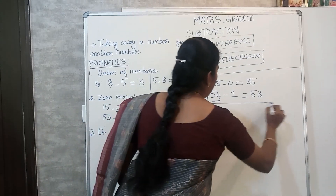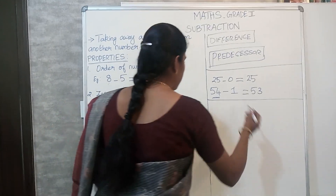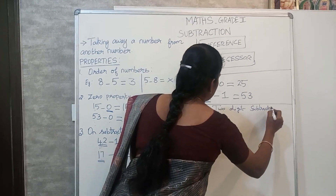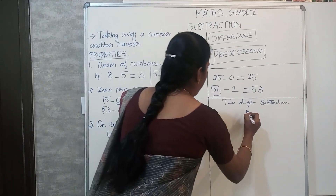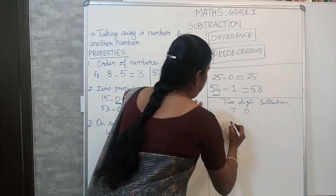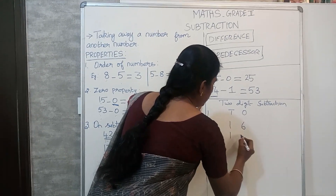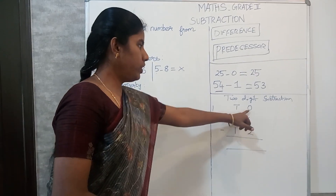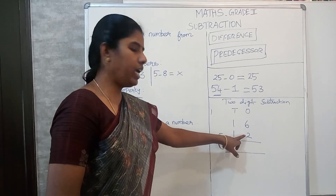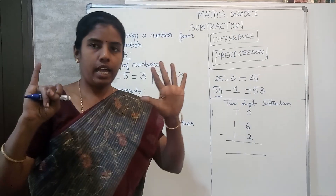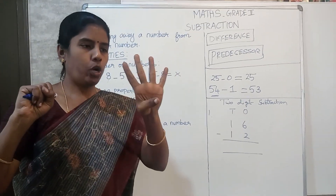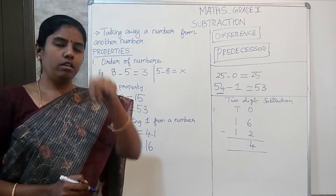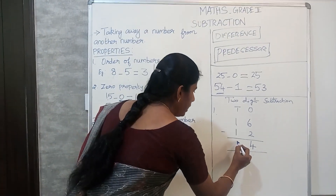Now let us move on to 2-digit subtraction. We have the ones place and the tens place. Take 16 minus 12. First we take the ones place: 6 minus 2. We take away 2 from 6, and the difference is 4. Then we move to the tens place: 1 minus 1. We have 1 and take away 1, so the difference is 0. So the answer is 04, which is 4.